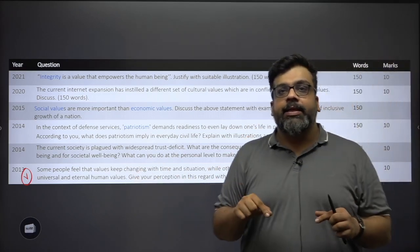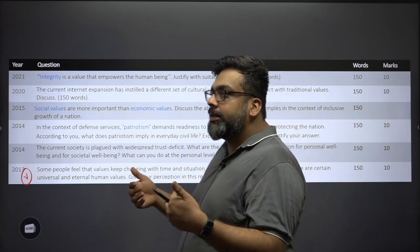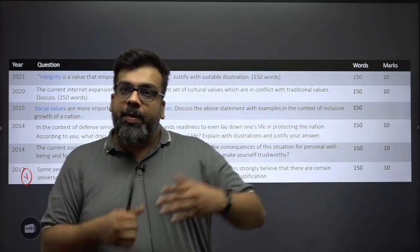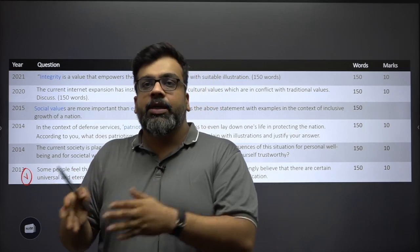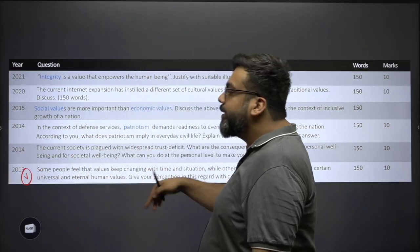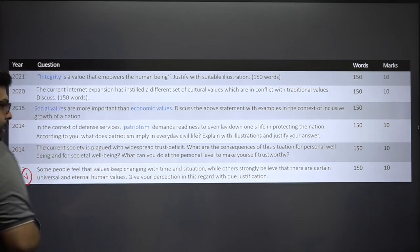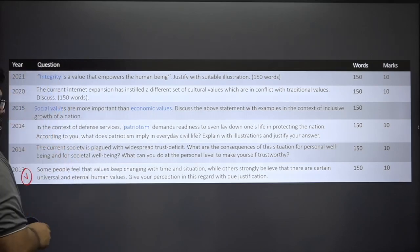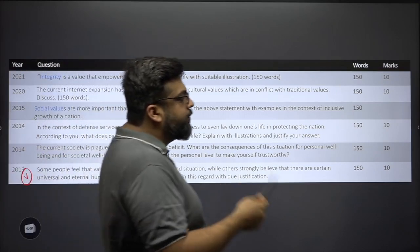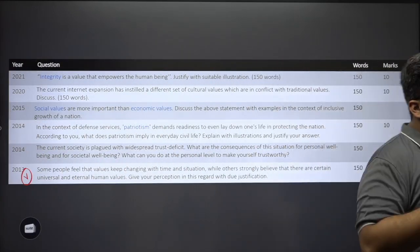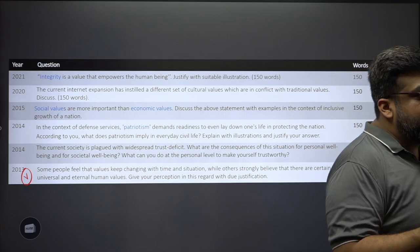This 2013 question could actually be better studied in the context of dimensions of ethics. When we apply ethics to sectors and society, we begin with the assumption that a few things are universal and eternal, and that context determines whether they change. The 2014 question states: 'The current society is plagued with widespread trust deficit. What are the consequences for personal and societal well-being? What can you do at the personal level to make yourself more trustworthy?'